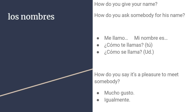Los nombres — how do you give your name? To give your name you would say me llamo, or you could say mi nombre es, or simply soy followed by your name. Be careful — it is not me llamo es, just me llamo. Me llamo actually means I call myself, and mi nombre es means my name is, literally translated.